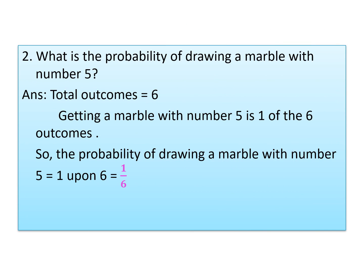Second question: What is the probability of drawing a marble with number 5? Total outcomes as usual is 6 only. Getting a marble with number 5 is 1 of the 6 outcomes. Out of 6, any 1 number is 5. So the probability of drawing a marble with number 5 is equal to 1 upon 6. The answer is 1 upon 6.